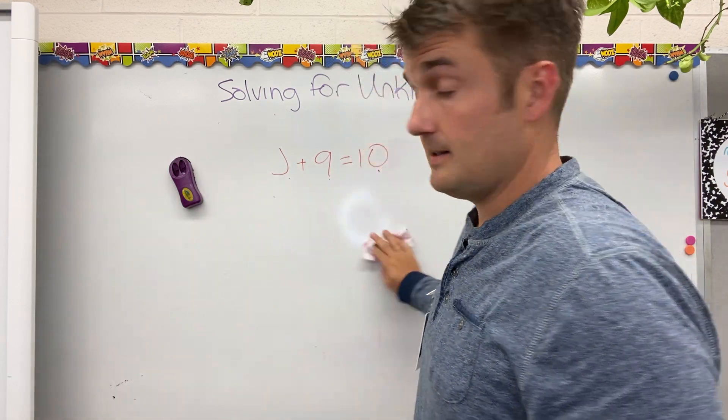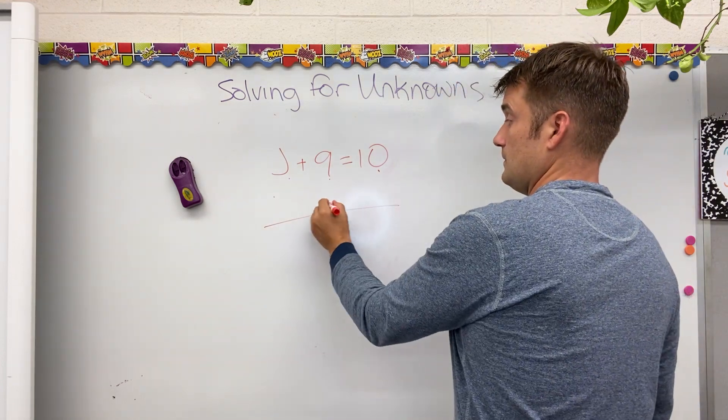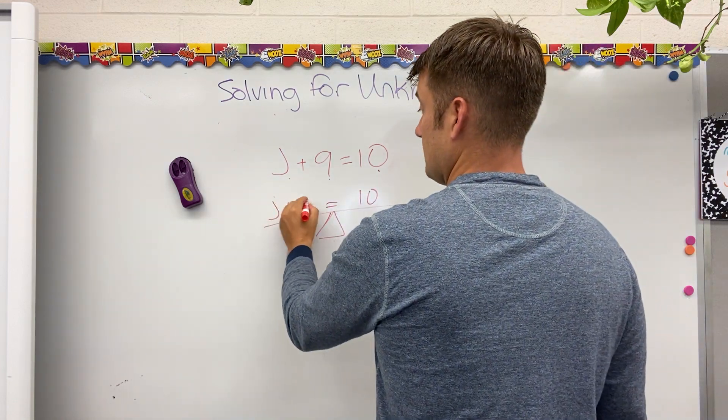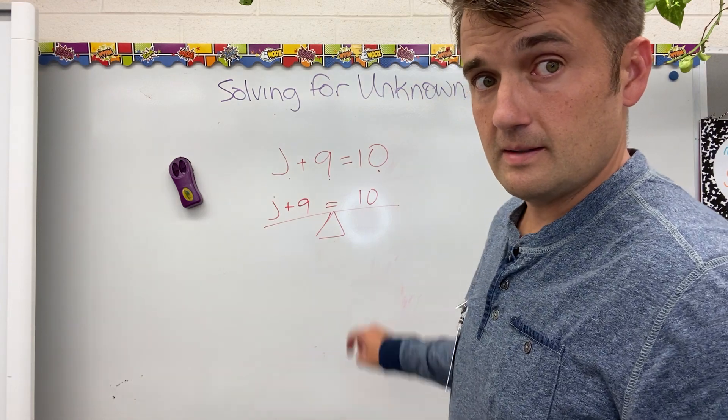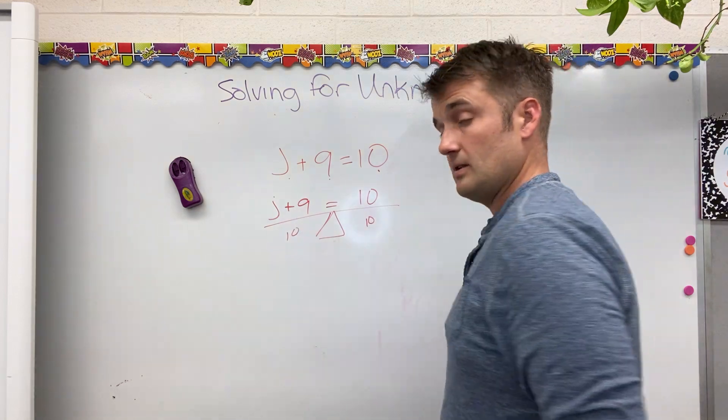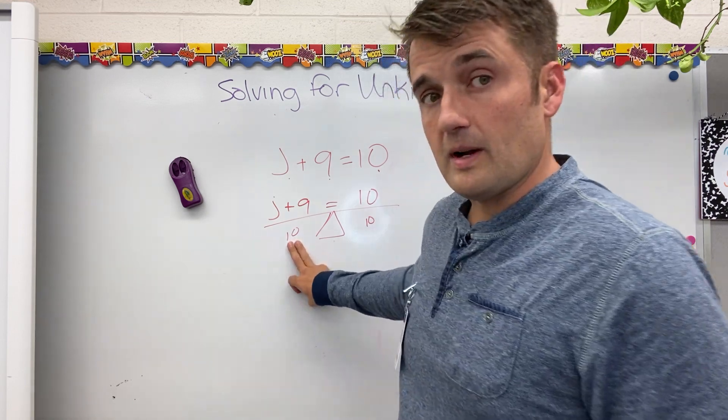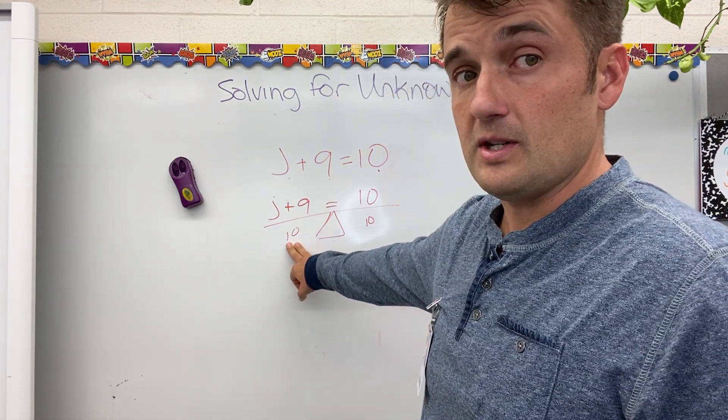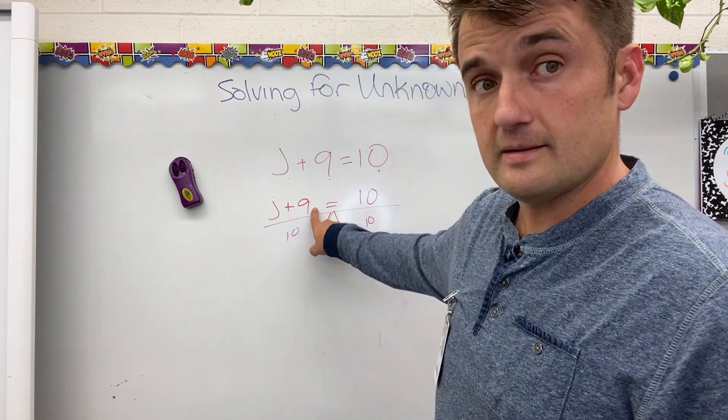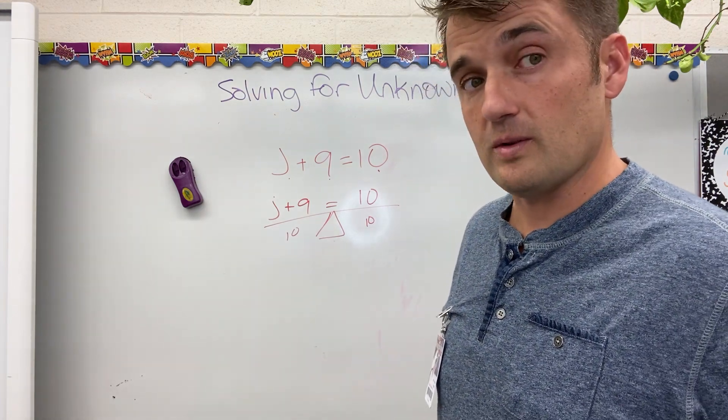Or, I can seesaw it. Equal sign, equal sign. This side is 10. This side is J plus 9. My equation has to balance. This side of my equation has a value of 10. That means that this side of my equation must also have a value of 10. Remember how we talked about the opposite of addition is subtraction. So, 10 minus 9 is 1. Either way, I come to the conclusion that J equals 1.